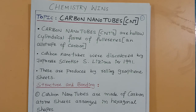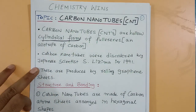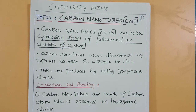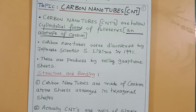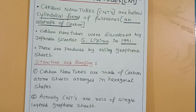Students, you are watching the Chemistry Wins YouTube channel. In this video session, let us discuss about carbon nanotubes. Carbon nanotubes are hollow cylindrical forms of fullerenes. Carbon nanotubes are also allotropic forms of carbon, just like Buckminster fullerene C60. Carbon nanotubes were discovered by Japanese scientist S. Iijima in the year 1991.